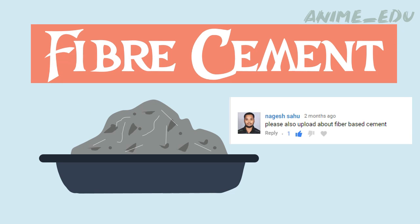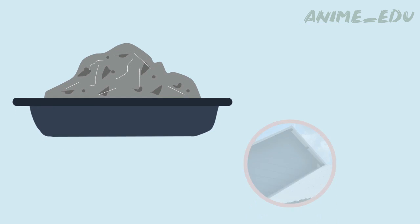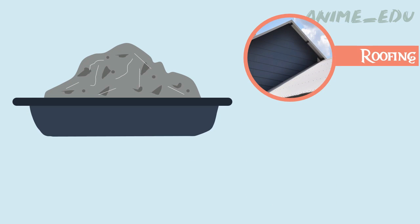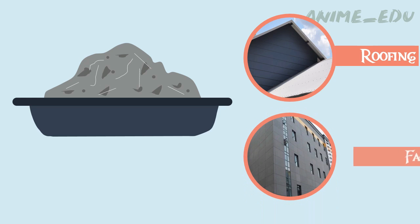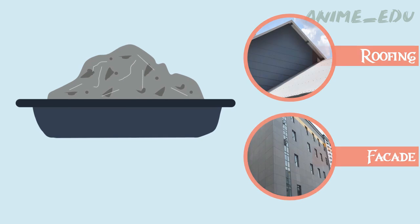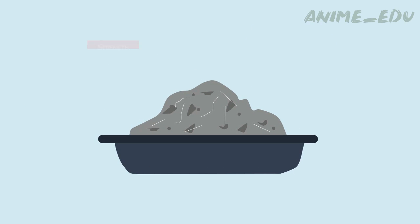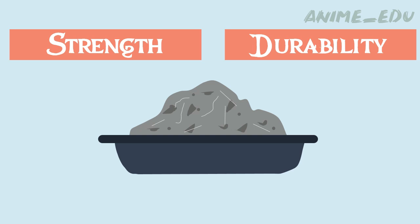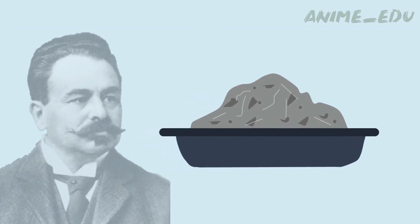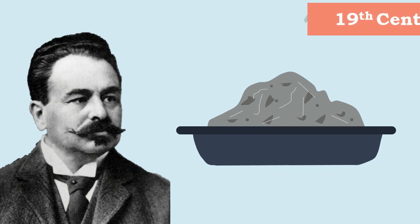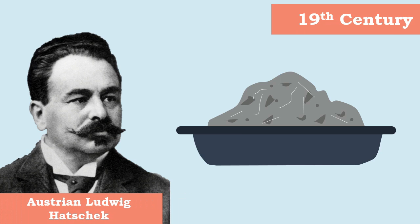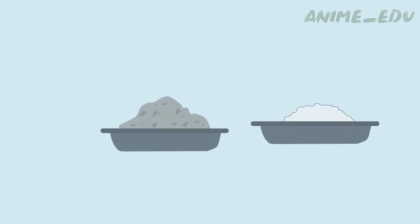Fiber cement is a composite construction material used mainly in roofing and facade works because of its strength and durability. Fiber cement was first invented in the late 19th century by the Austrian Ludwig Hackwick.